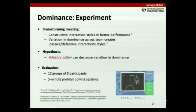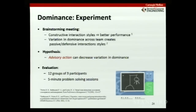Research has shown that particular types of meetings, especially brainstorming meetings, work better when everyone's talking more equally. If you can get constructive interaction styles, you get better performance. On the flip side, when there's varying dominance — someone talking a lot, someone not talking enough — you get passive and defensive interaction styles, which is what we don't want. Our hypothesis is that using advisory actions, we can decrease this variance in dominance.